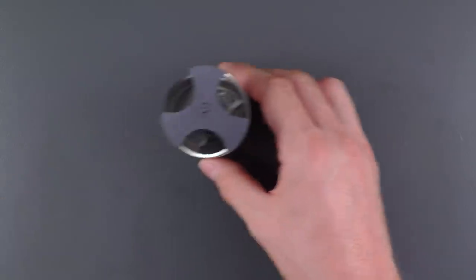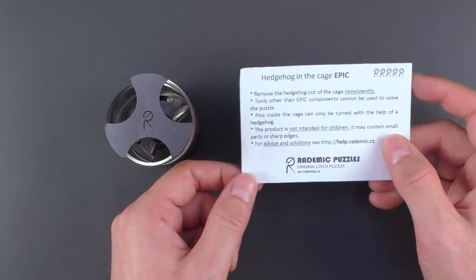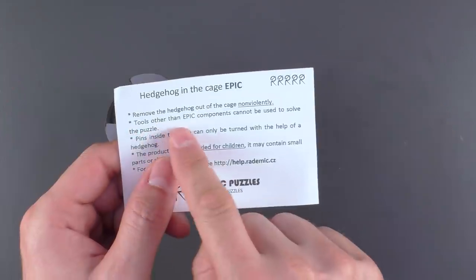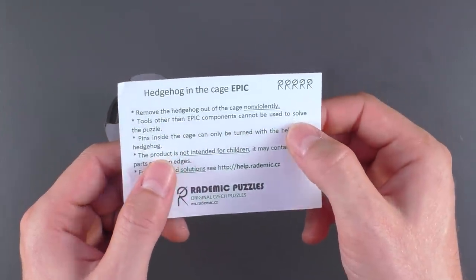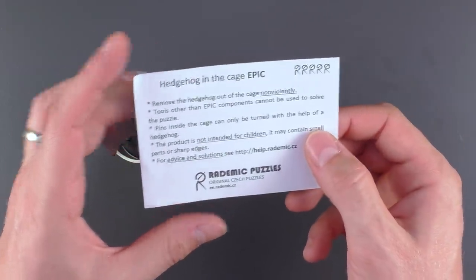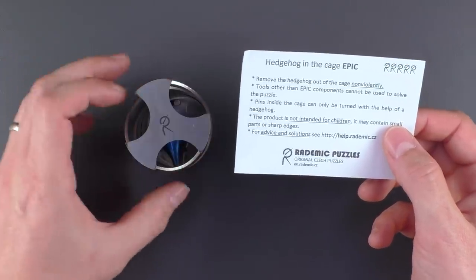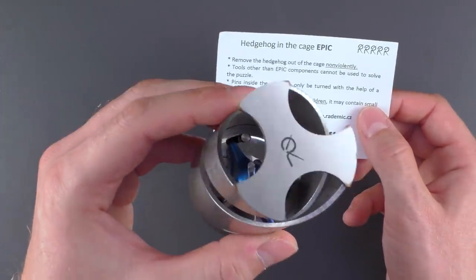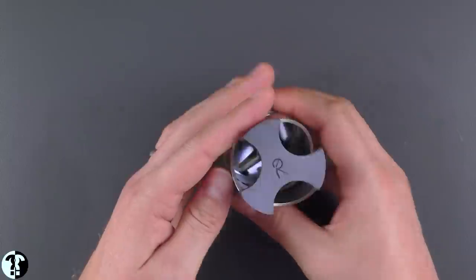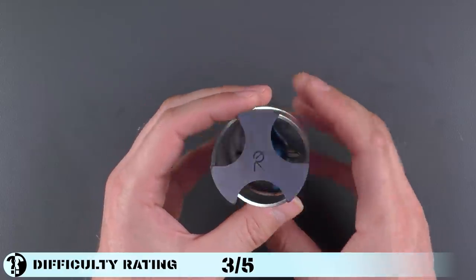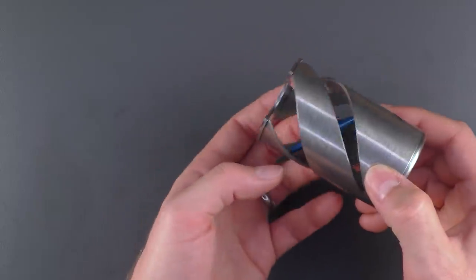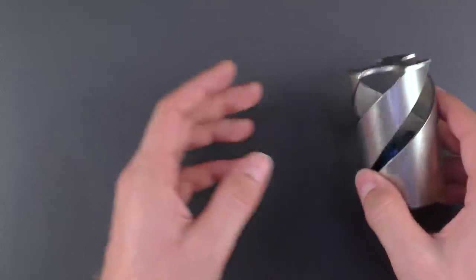It also comes with the instruction and the instruction gives us the following information. Remove the hedgehog out of the cage, non-violently of course. Tools other than epic components cannot be used to solve the puzzle. No external tools. Pins inside the cage can only be turned with the help of a hedgehog. So with pins they're probably referring to these pins here that are visible on the bottom of the puzzle. And that's it regarding the instructions for the puzzle. We will respect the rules of course as we always do and after spoiler break I will give it a first try.